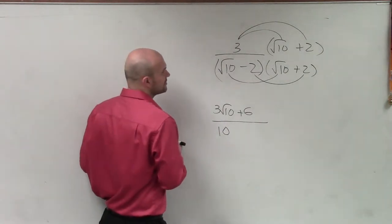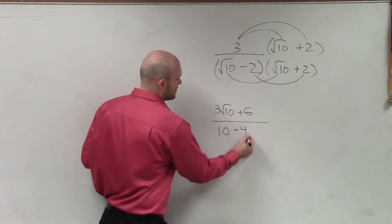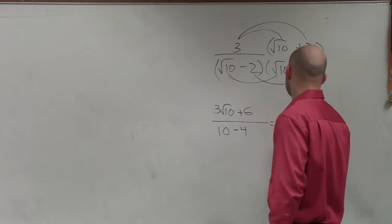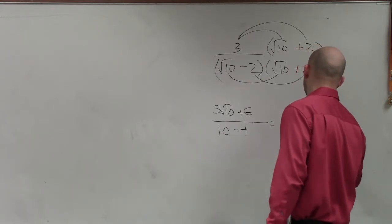Negative 2 times 2 is negative 4. So therefore, that simplifies to 3 square root of 10 plus 6 over 6.